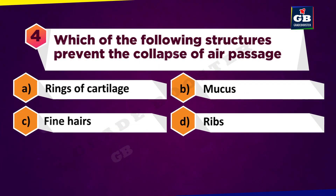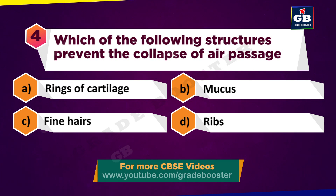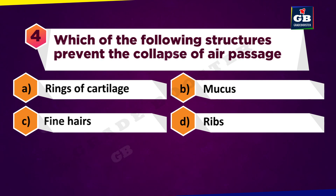Which of the following structures prevents the collapse of air passages? A. Rings of cartilage, B. Mucus, C. Fine hairs, D. Ribs.